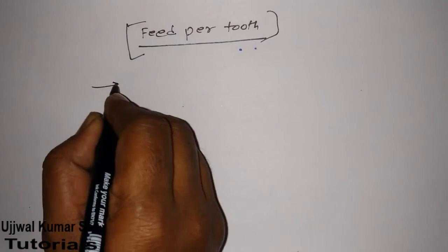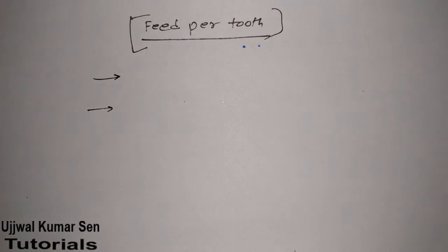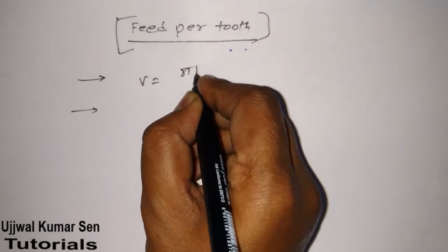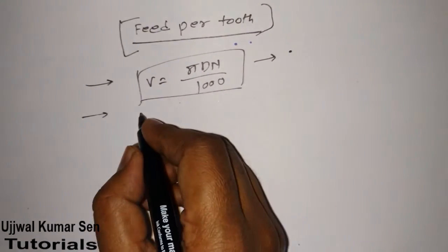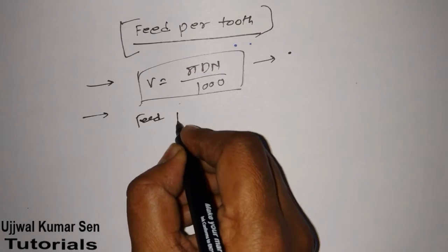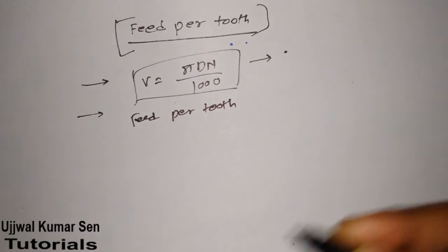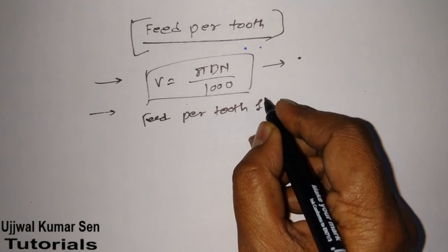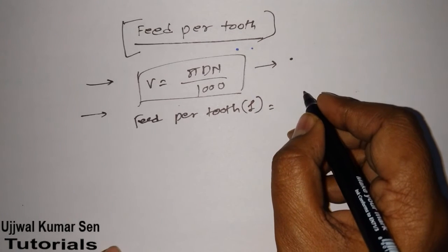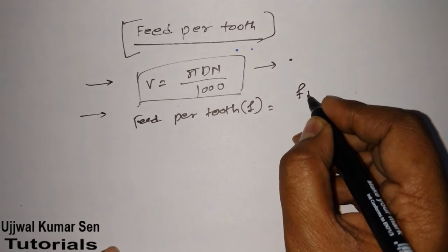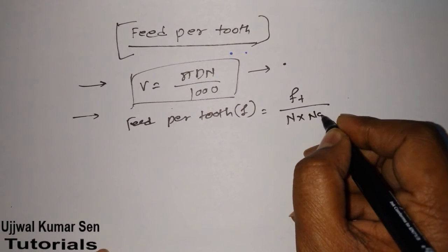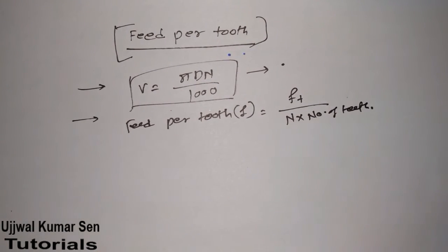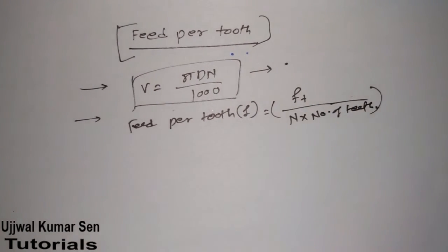I'm going to share with you a few formulas that are most important for finding out feed per tooth, as well as some basic concepts. We know that V equals pi DN by 1000, which is one of the most important formulas. Another one is feed per tooth: F equals feed in transverse divided by N times number of teeth.